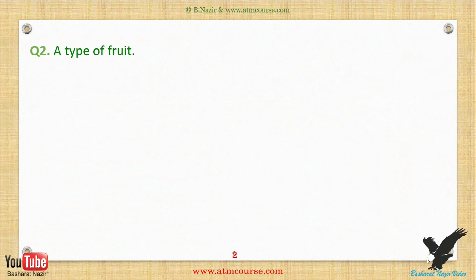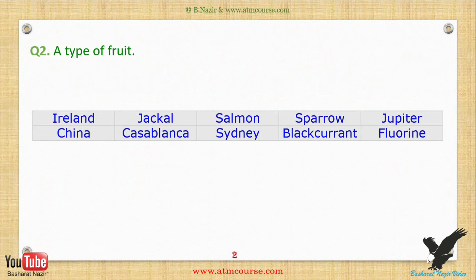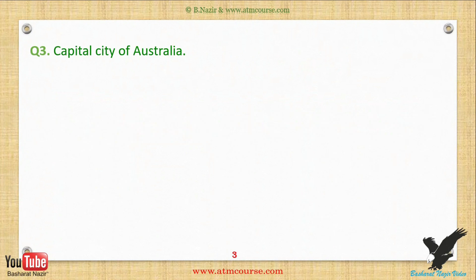A type of fruit. Choose from one of these answers. Capital city of Australia.